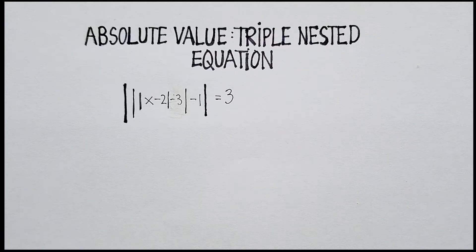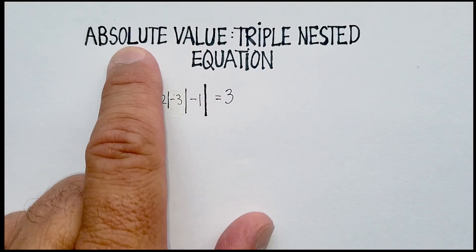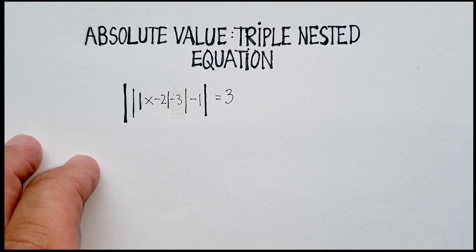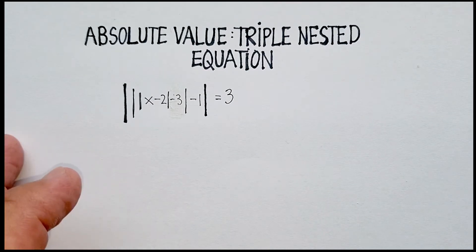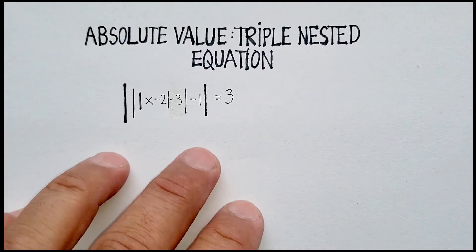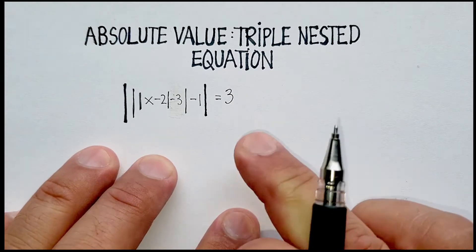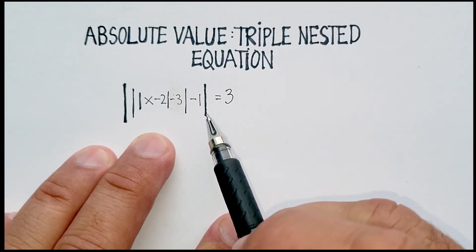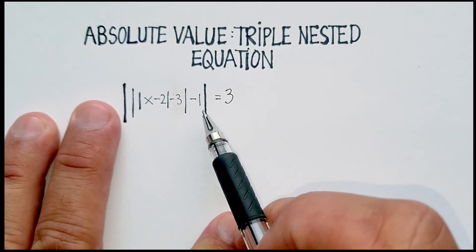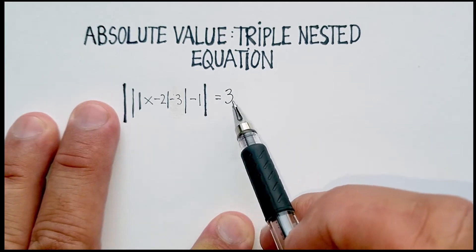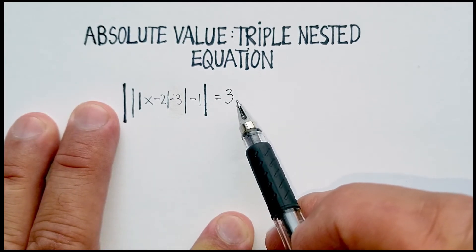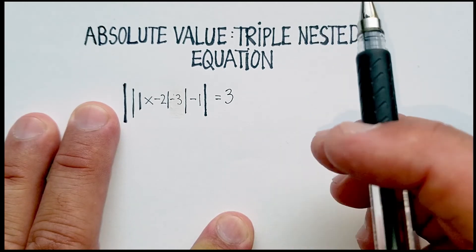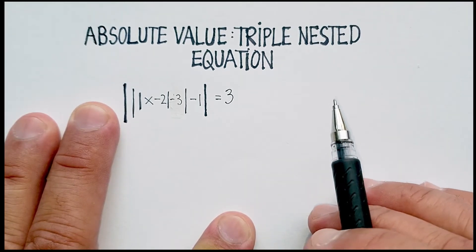Remember, an absolute value is simply the distance away from zero. So if you are three units away from zero, you can be on the negative side or positive side. Whenever you start off with an absolute value equation, you try to isolate the absolute value itself, and it should always equal some kind of a positive number, because equaling a negative number doesn't make any sense.